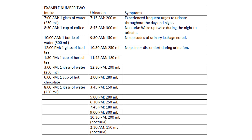In example number two, the first column again shows fluid intake with timing, the second column shows voided urine with timing, and the third column shows symptoms. This patient is passing an excessive amount of urine during the daytime and twice at night, passing good volumes of 200 ml, 300 ml, 250 ml, and 280 ml per void.